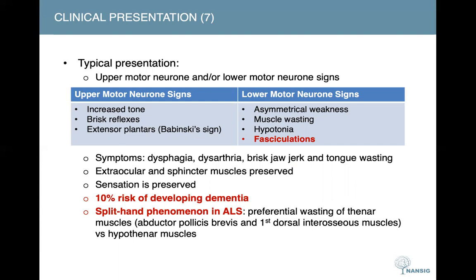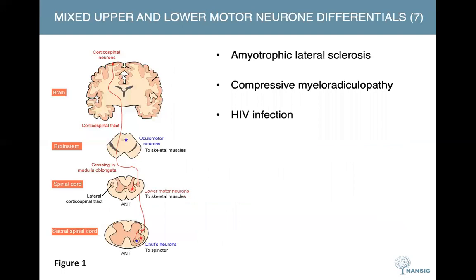Unfortunately, if one is diagnosed with motor neuron disease, there is also a 10% risk of developing dementia. One very classic sign to point out is the split-hand phenomenon, which occurs in ALS. This is essentially preferential wasting of the thenar muscles — just below the thumb — as opposed to the hypothenar muscles just below the little finger.